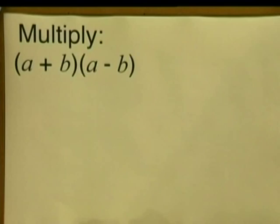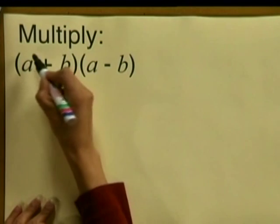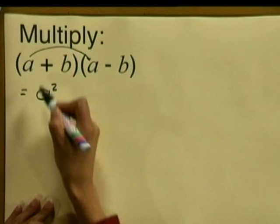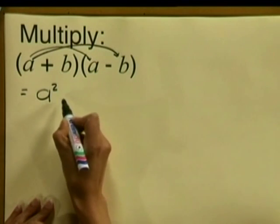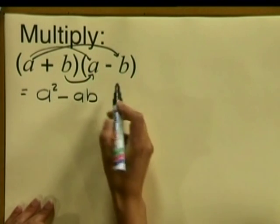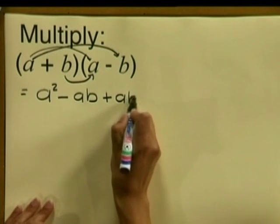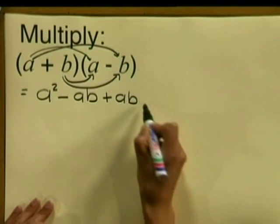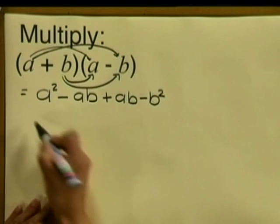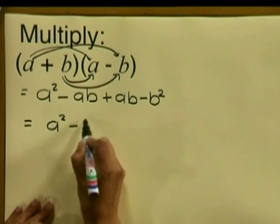In order to understand how to solve the difference of two squares, look at the following process. How do you multiply a plus b by a minus b? Well, a multiplied by a gives us a squared, and a multiplied by minus b gives us minus ab. Then b multiplied by a gives us plus ab, and b multiplied by minus b gives us minus b squared. So if you add your like terms you will get a squared minus b squared.